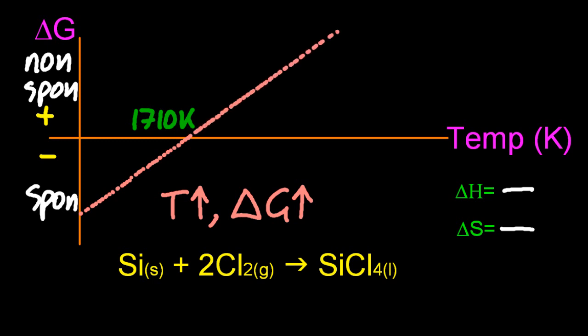So above that temperature, delta G becomes plus. The reaction isn't spontaneous. It stops. So I'm thinking that at that temperature, maybe the product starts to break apart at these high temperatures. I'm not really sure, and you don't really need to know.